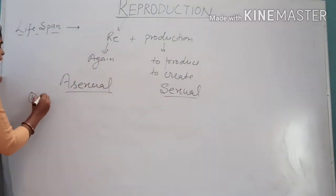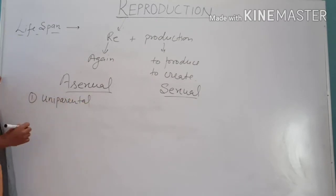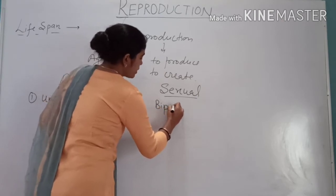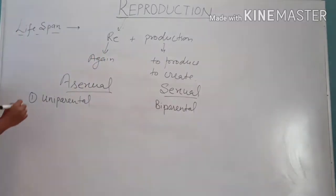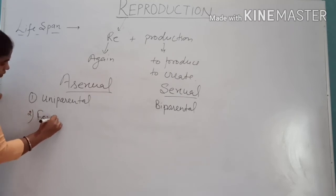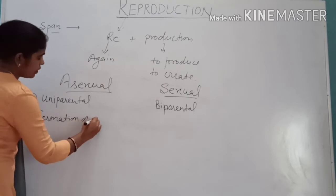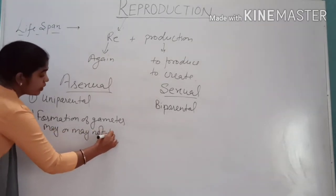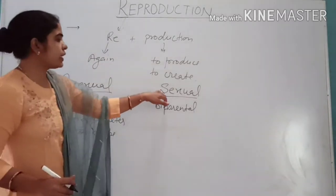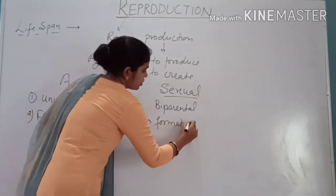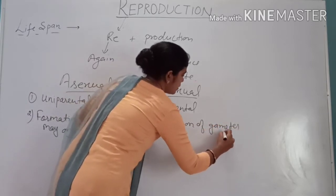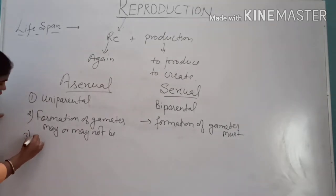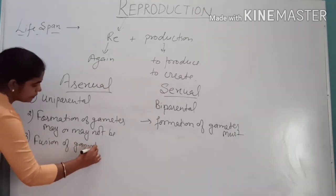The asexual method is uniparental, meaning a single parent is involved and produces the next progeny. While the sexual method is biparental — both sexes are involved in the production of new offspring. In asexual reproduction, formation of gametes may or may not occur, and fusion of gametes does not occur.